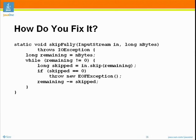We've taken the number of bytes requested to skip and have a loop. We track how many bytes left we need to skip. We call skip asking it to skip this many bytes, and it returns some value. If it returns zero, we're at end of file, so we throw an EOFException. Otherwise, we decrement the remaining count by the number of bytes actually skipped. If we skip as many bytes as requested, remaining will be zero and we exit the loop. If not, we go back for another skip. So the method will either skip the exact number of bytes requested or throw EOFException.